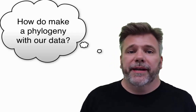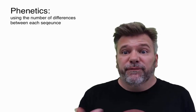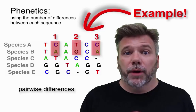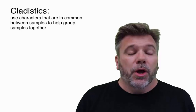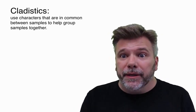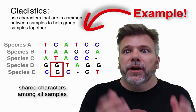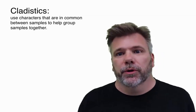So, how do we go about generating a phylogeny based on the data that we've generated? Well, we could do distance approaches called phonetics and look for the pairwise number of differences between each of our samples. Or, we could look for those characteristics that are in common using something called cladistics — to find what are the shared characters that exist between each of the samples. And that's the approach that we're going to use.